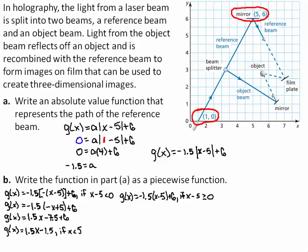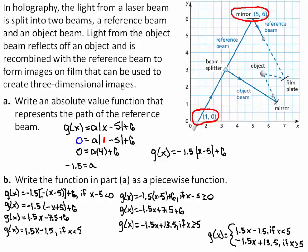Now simplify g equals negative 1.5 times the quantity x minus 5, plus 6 if x minus 5 is greater than or equal to 0. Distributing negative 1.5 through the quantity x minus 5, you get negative 1.5x plus 7.5 plus 6. Combining like terms, you get negative 1.5x plus 13.5. The inequality x minus 5 is greater than or equal to 0 simplifies to x is greater than or equal to 5. So the complete piecewise function is: g equals 1.5x minus 1.5 if x is less than 5, and g equals negative 1.5x plus 13.5 if x is greater than or equal to 5.